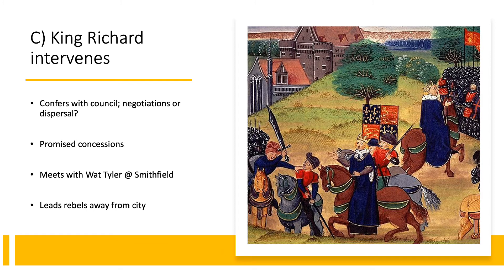Richard seemed more inclined — perhaps because he was only 14 — to enter into negotiations. On the 14th of June he met with some of the revolt's leaders and promised to grant them everything they wanted: he would abolish serfdom, standardize rents across England, and punish traitors (though they didn't really identify who those traitors were). They seemed to have a very productive meeting. The leaders went back to the crowds saying the king had given them everything they wanted.